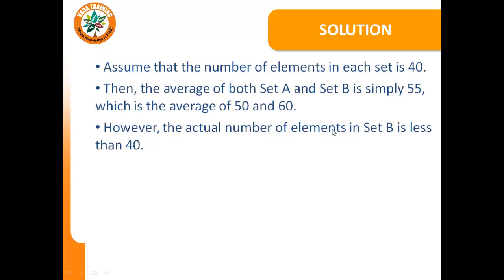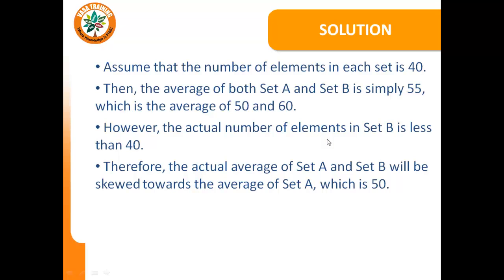However, the actual number of elements in set B is less than 40. It is actually 39. Therefore, we expect the actual average of set A and set B will be skewed towards the average of set A, which is 50.